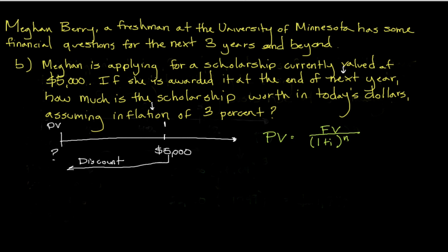On this side, we're going to note our variables — the next step is to identify what we have. Present value is unknown; that's what we're solving for. Our future value is of course five thousand dollars in one year. Our interest rate, the little i, is going to be three percent, and n, the number of years, is going to be one.